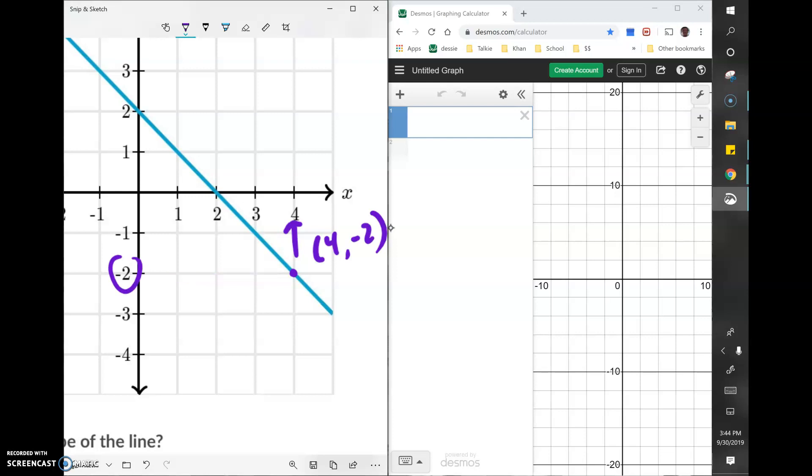And then we need a second point. Let's go ahead and choose this point right here. For the x value it'd be 1 comma, for the y value it would be 1 as well. And now I'm just going to add a table and I'm going to type in the first coordinate point: 4 for x, negative 2 for y. And I'm going to type in the second coordinate point: 1 for x and 1 for y.